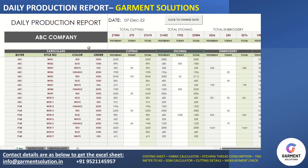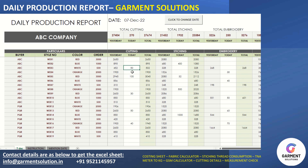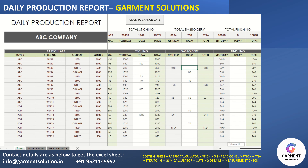This is a daily projection report format for the garment industry. For every day there will be a single sheet. For example, for 7 December, these figures are the data before 7 December. For daily data, you just have to enter the actual cutting or actual stitching in these places.